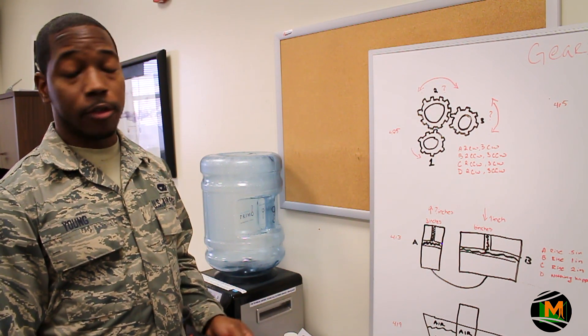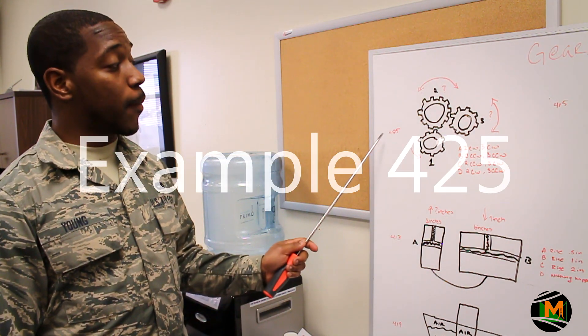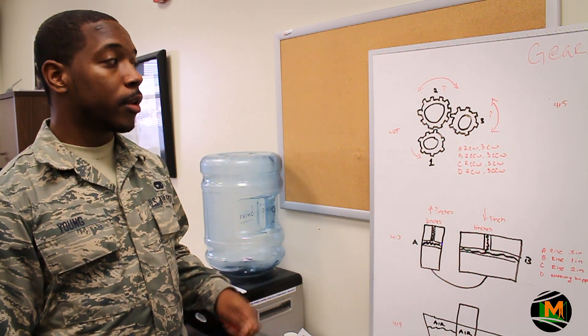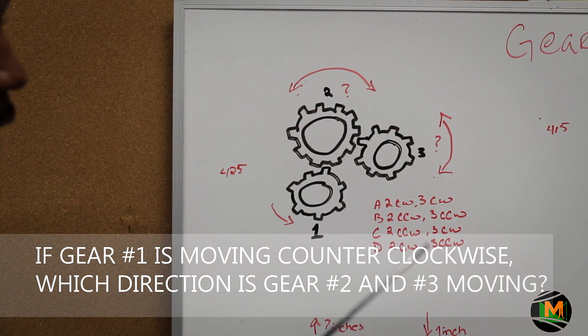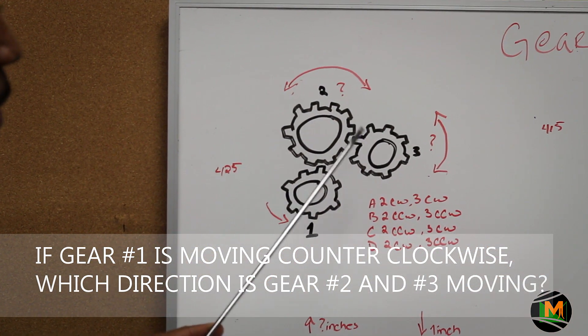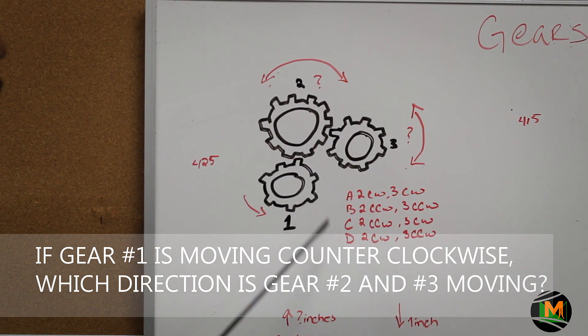The first example of a problem that you see on the ASVAB is example number 425. The question states: if gear number 1 is moving counterclockwise, which direction is gear number 2 and number 3 moving? These are your choices of answers.